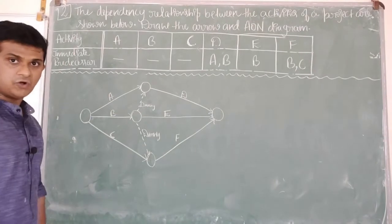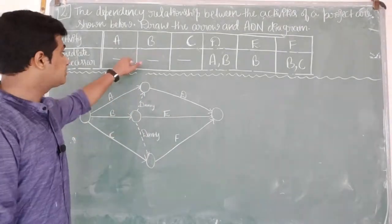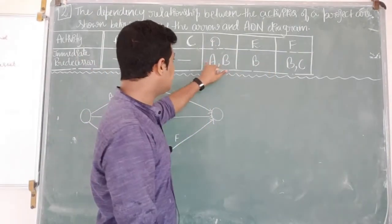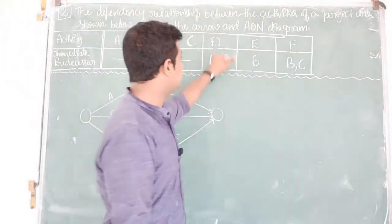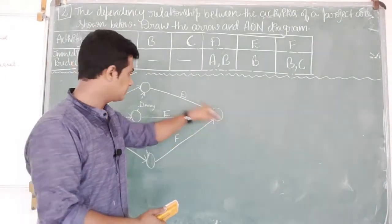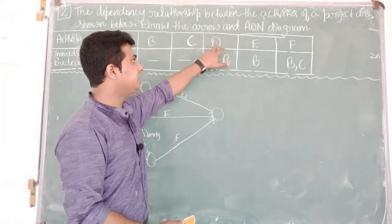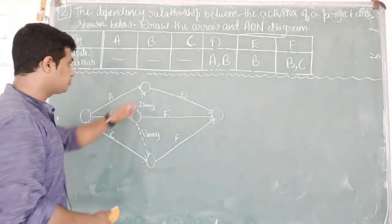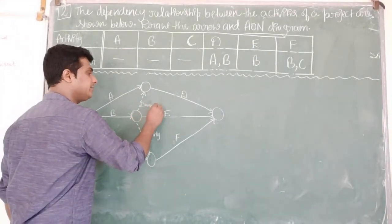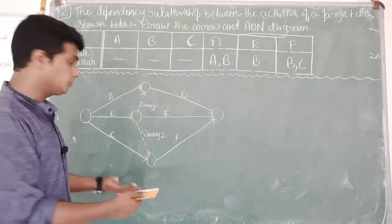So this is how we draw an arrow diagram. Remember three aspects: first, starting activities which do not have immediate predecessors; second, ending activities which do not act as predecessors — D, E, and F are not appearing in the immediate predecessor column, so they are ending activities and must end on the same node; third, since A and B must join to start D, and B and C must join to start F, we use dummy activities — dummy 1 and dummy 2 — to establish those connections.